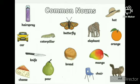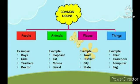Some of these are examples of common nouns. Common nouns for people, for example: girl, boy, teacher, doctor. Animal examples: elephant, cat, mouse, lizard. Place examples: town, district, city, street. Things examples: chair, classroom, computer, bag. All these are called common nouns. What are they called? Common nouns.